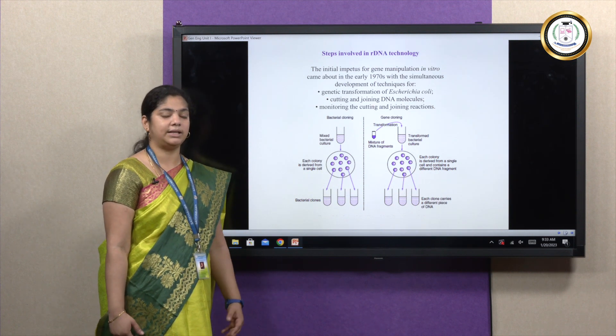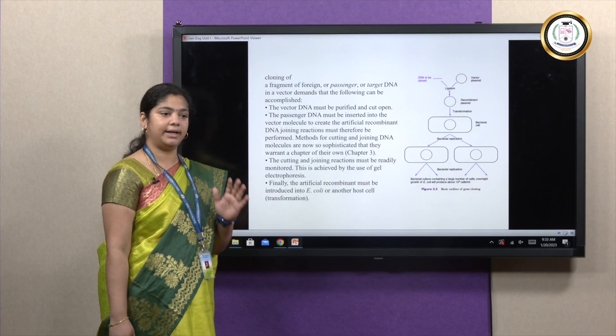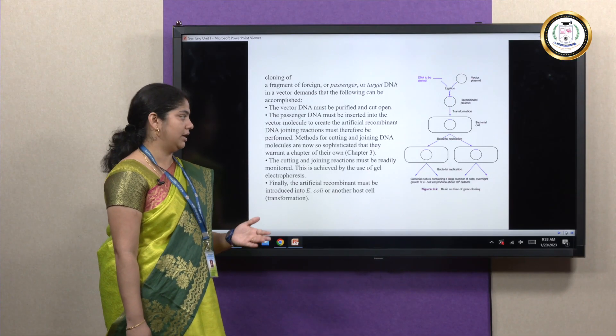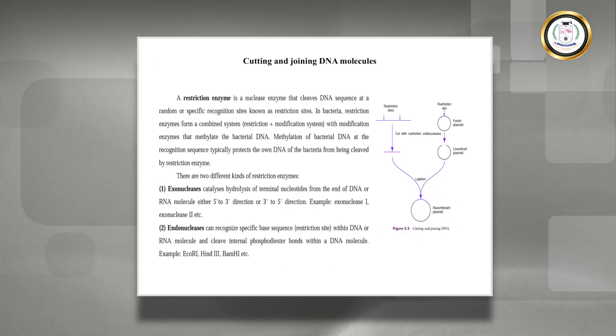The host can be a bacteria or a virus. Initially you have to clone the vector where the vector plasmid is first cut in and then joined by the target sequence. Here it goes through a series of processes which we will be seeing in detail. In this video, we will see what are all the enzymes and what are all the tools that are required for genetic engineering.